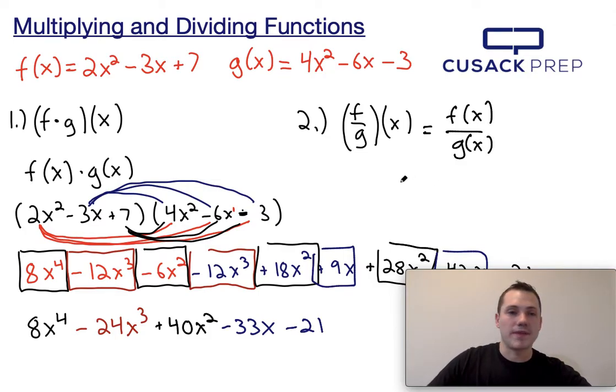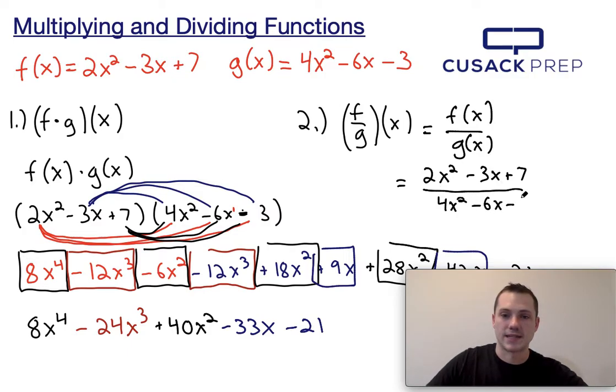So if I think about what f of x is, it's 2x squared minus 3x plus 7. And g of x is going to be 4x squared minus 6x minus 3. And that's pretty much how you do it. That's going to be f of x divided by g of x.